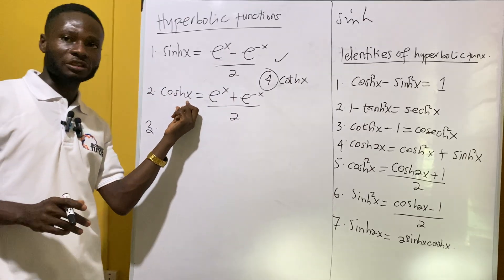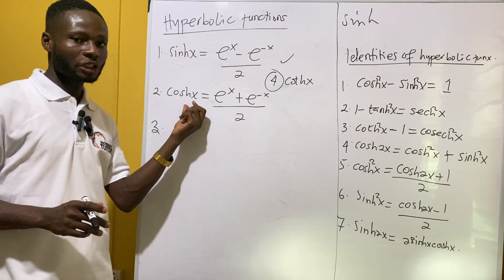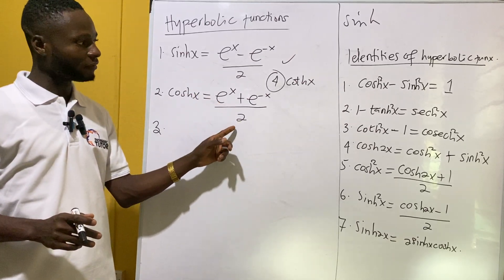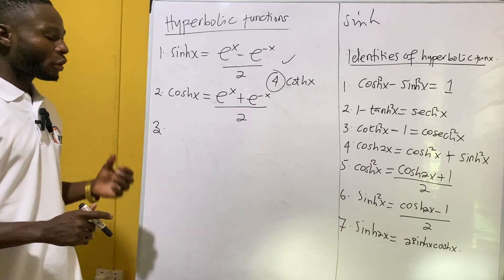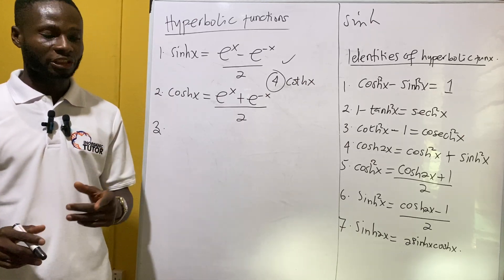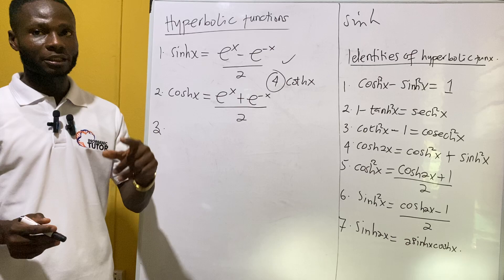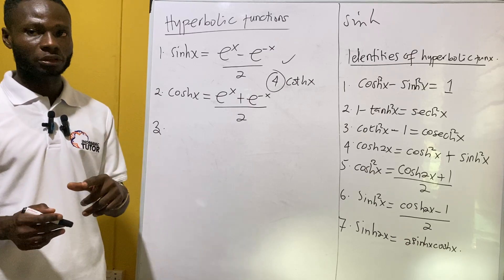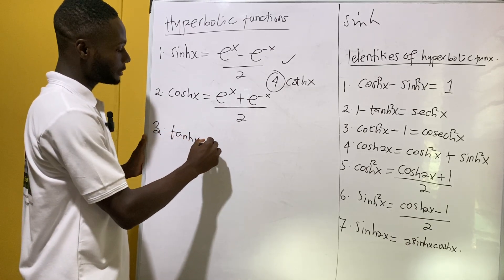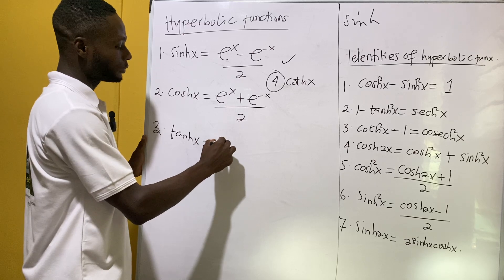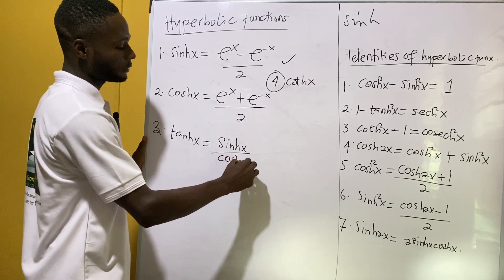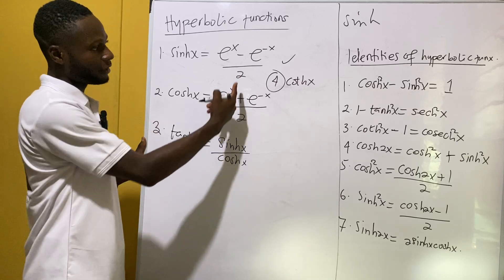The hyperbolic function for cosh is e^x plus e^(-x) all over two. Now we have to look for the hyperbolic function for tanh, and we know that tanh is sinh over cosh. So tanh(x) is equal to sinh(x) all over cosh(x).